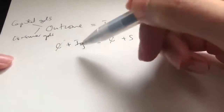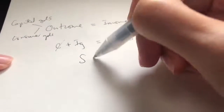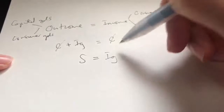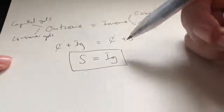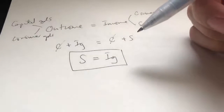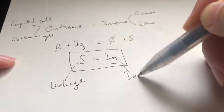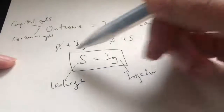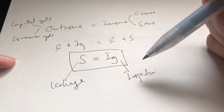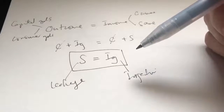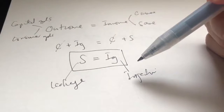We can cancel out consumption (C) from both sides of the equation, leaving us with IG equals S — or S equals IG. This is the leakage-injection equilibrium: S is leakage and IG is injection. In other words, there is an equilibrium from the point of view of leakage and injection.